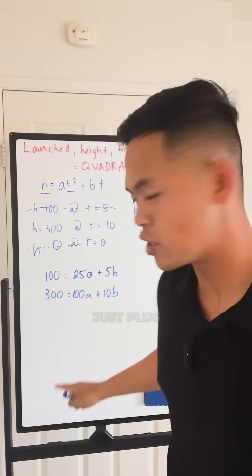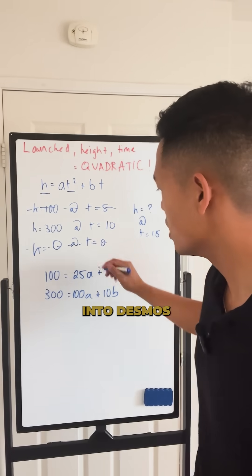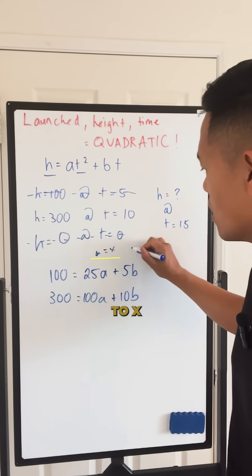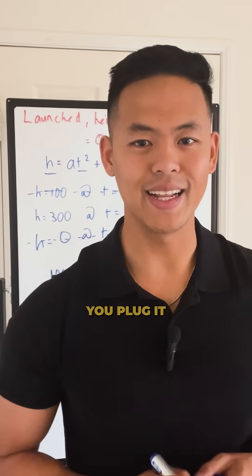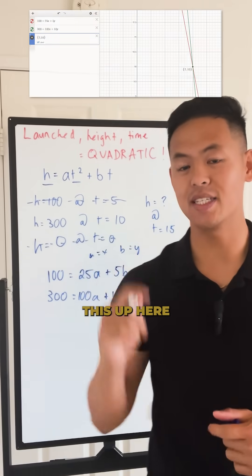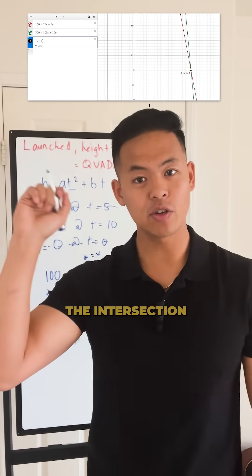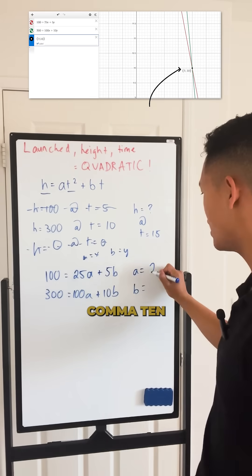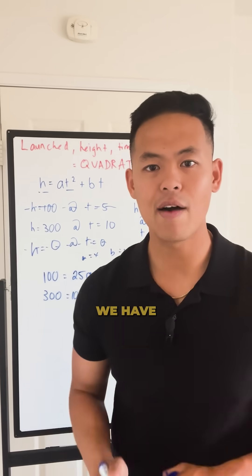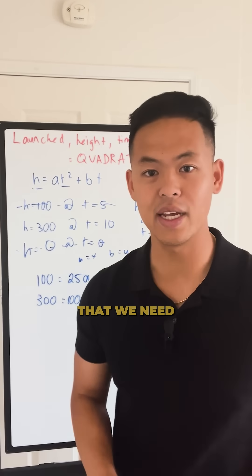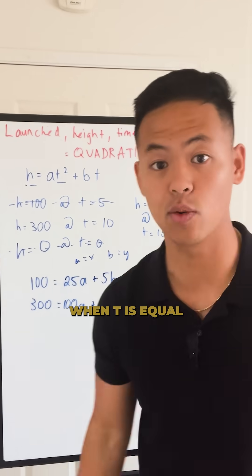The easiest way to do this is to plug these into Desmos. Call A equals X and B equals Y. Once you plug it into Desmos, you'll see the intersection point is 2 comma 10, which means A is 2 and B is 10. Now we have all the constants to solve for H when T equals 15.